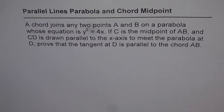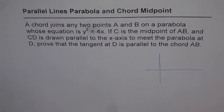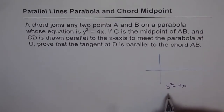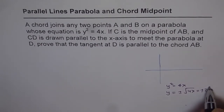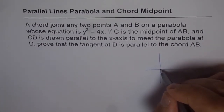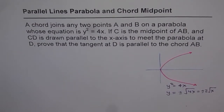Let us try to sketch this and understand what the question is talking about. We have an equation of a parabola which is y squared equals 4x. If y squared is 4x, then y equals plus or minus square root of 4x, which is plus or minus 2 square root of x. So basically, we have a square root function which is stretched, and it is on both sides — it is a relation. So this is our function, and that is a parabola y squared equals 4x.